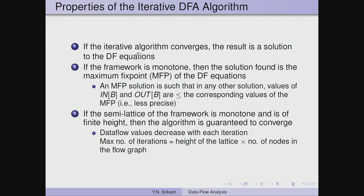The first property of the iterative algorithm is: if the iterative algorithm converges — we have not yet given conditions on its convergence — the result is a solution to the data flow equations. This is straightforward to understand because if the algorithm converges, there is no change in the value produced, and therefore it must satisfy the data flow equations.